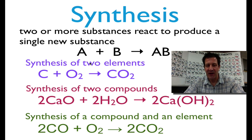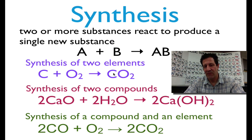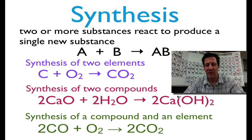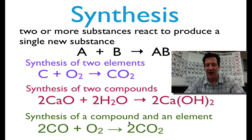There are three different kinds of synthesis reactions. You can have two elements, such as carbon and oxygen combining to form carbon dioxide. You can have two compounds reacting to form a single compound — for example, calcium oxide and water to produce calcium hydroxide. And finally, you can have a compound and an element, such as carbon monoxide and oxygen gas reacting to produce carbon dioxide.